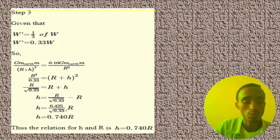After this, h is equal to 0.45 over 0.33 times R, so h equals 0.74R.